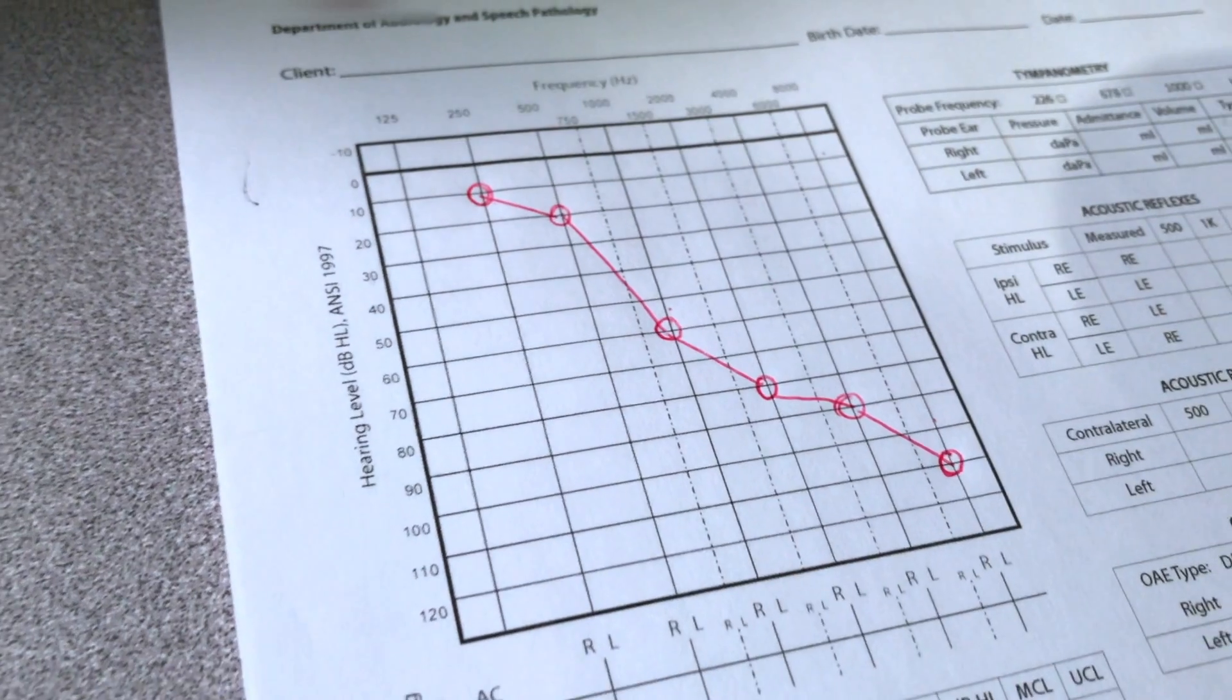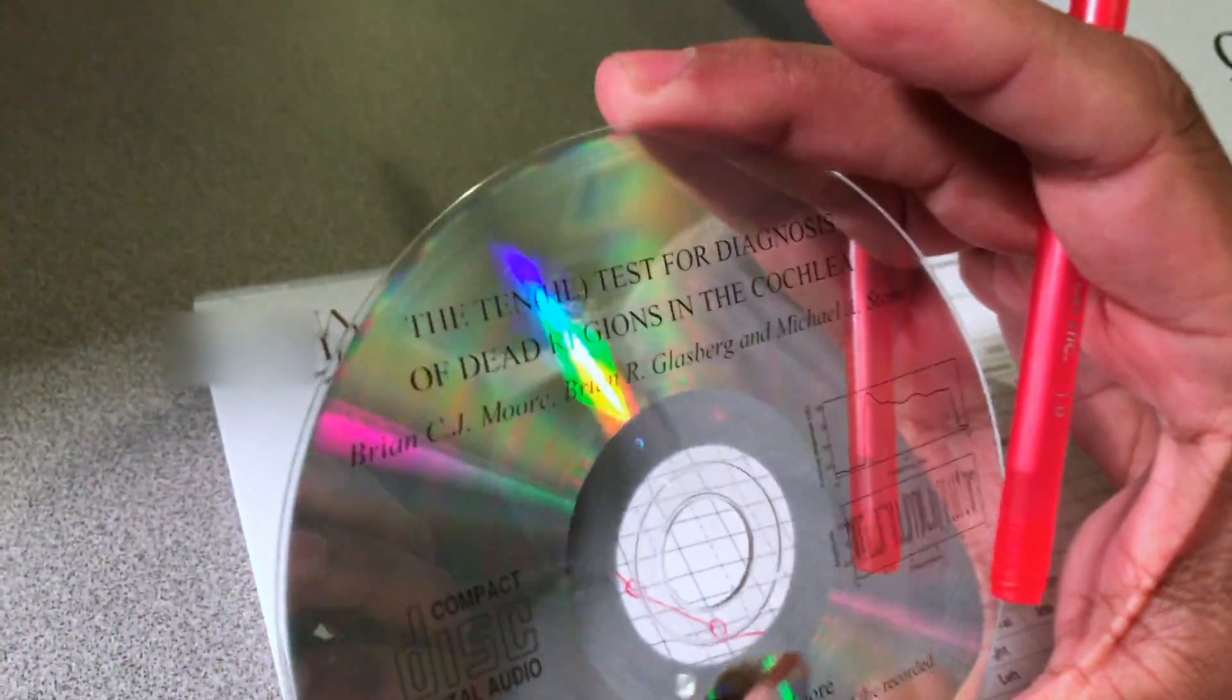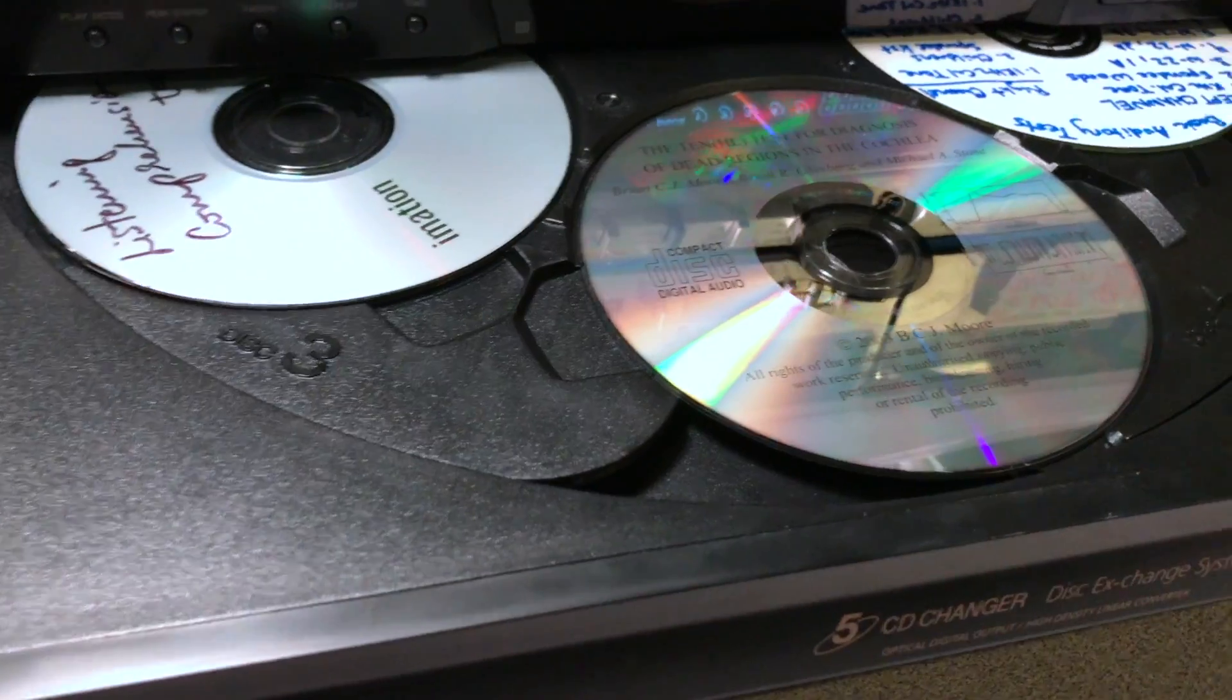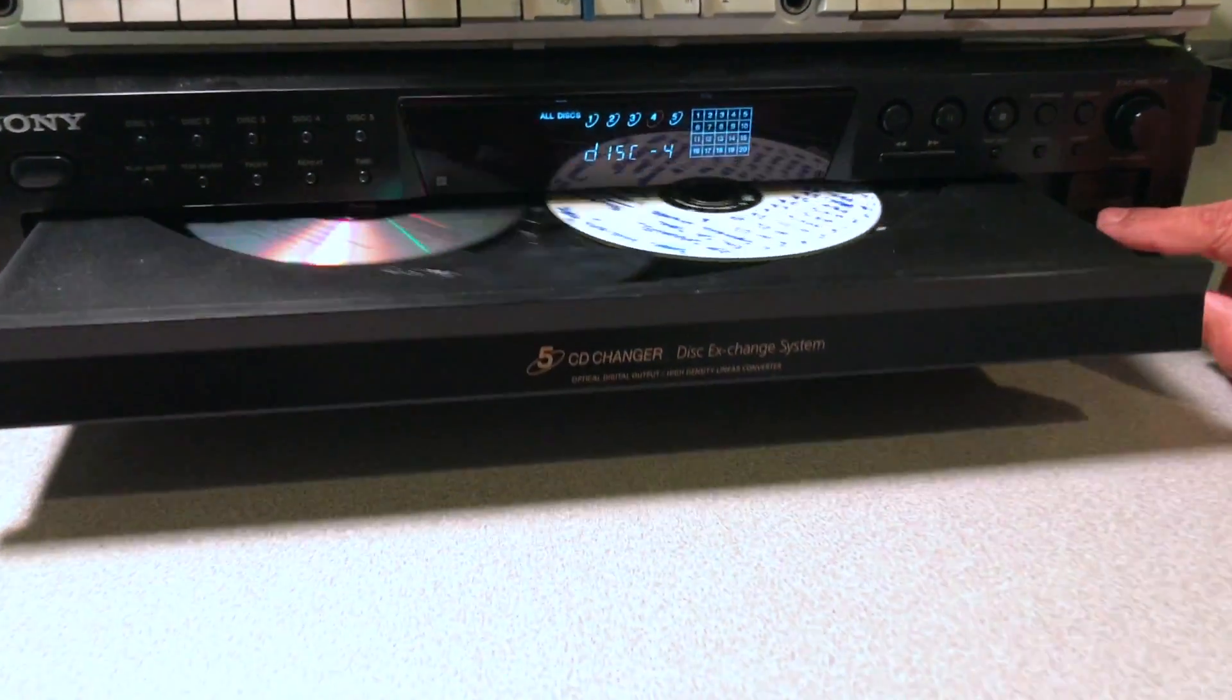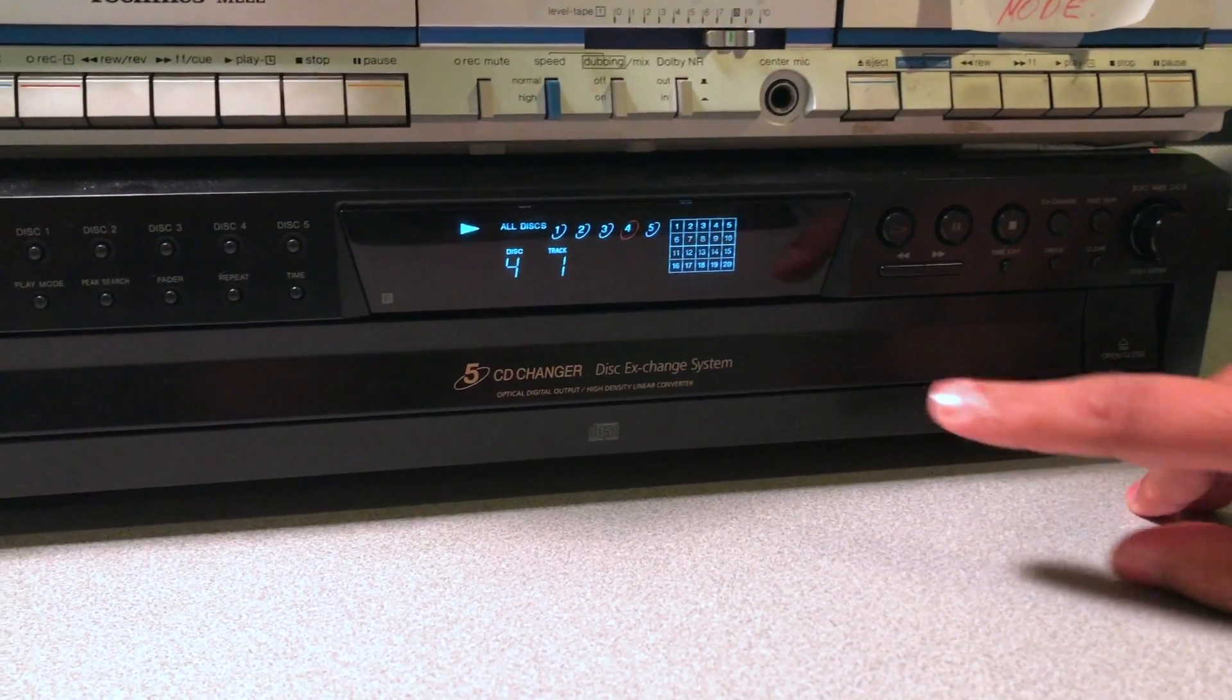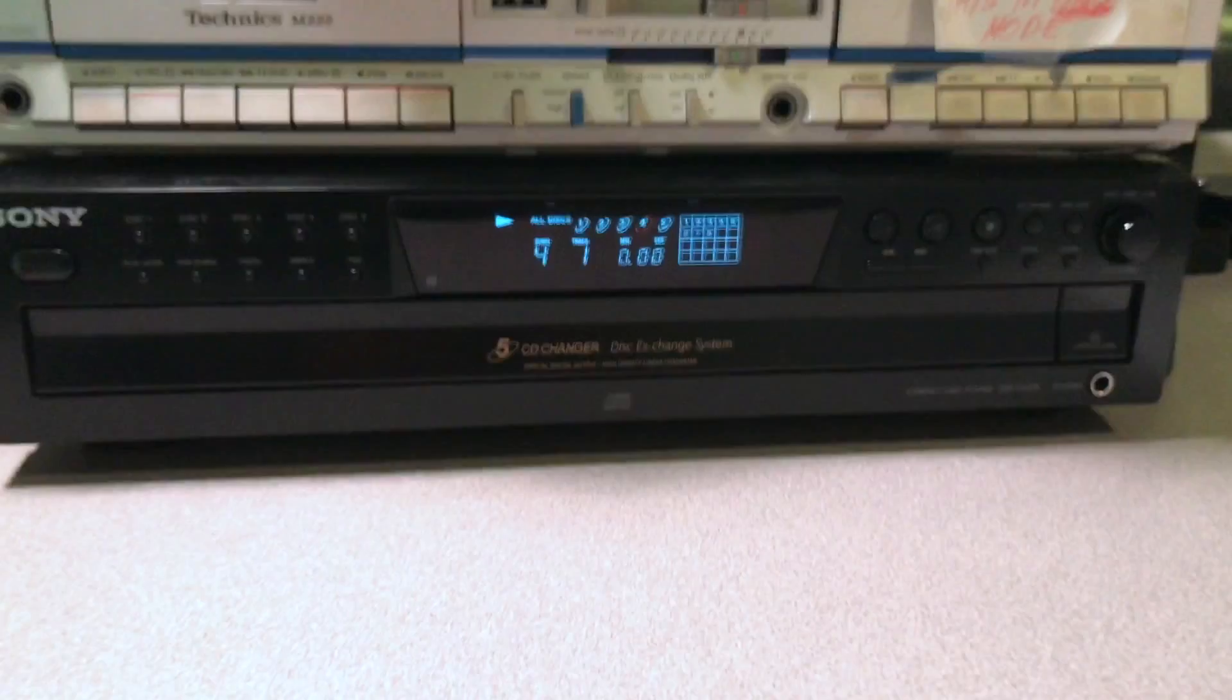Now let's see how to do the TEN test. Here is the TEN test CD. First thing, you need to calibrate the CD. That's basically making sure that the VU meter is set to zero. We have it on this port. Now play the CD, select track 1, which is basically a pure tone presented.